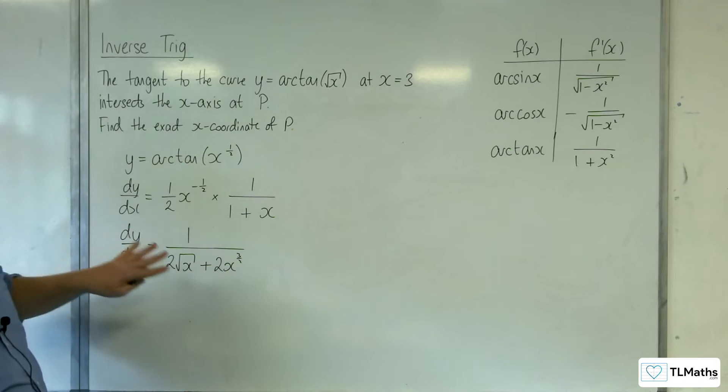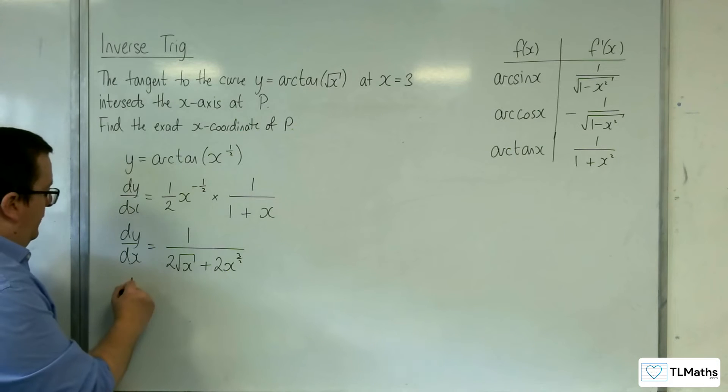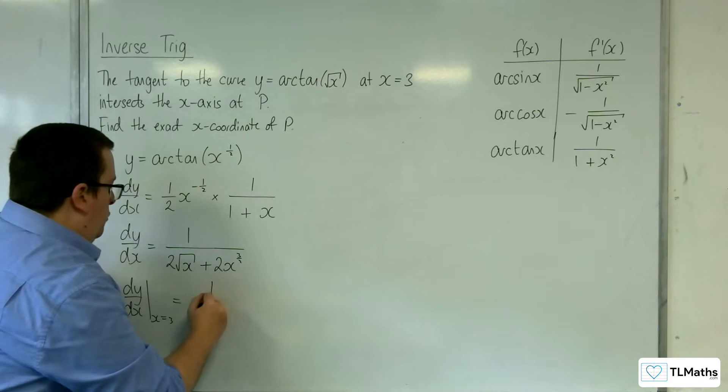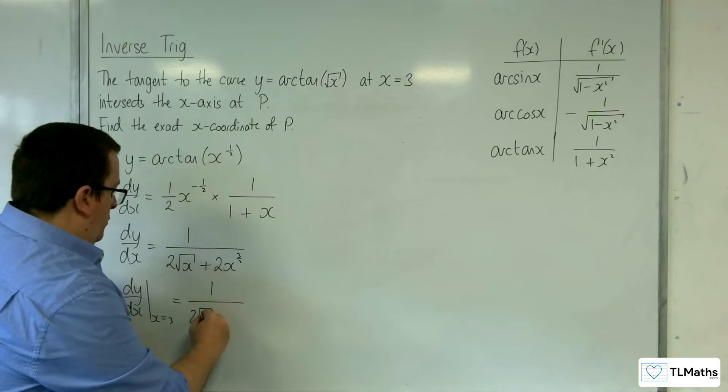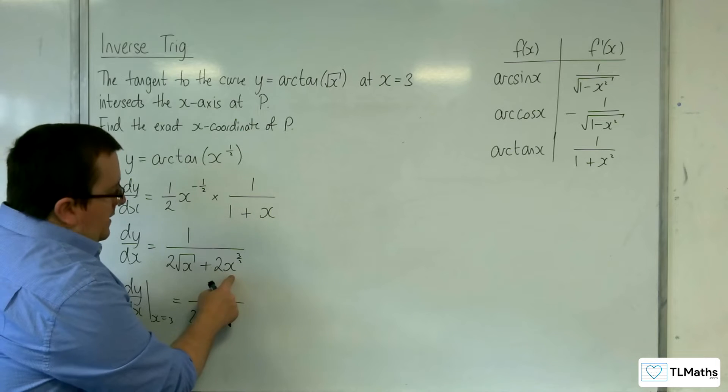So we now need to evaluate the gradient when x is equal to, dy by dx when x is equal to 3 is 1 over, now we've got 2 root 3 plus, now here we've got 3 to the power of 3 halves.